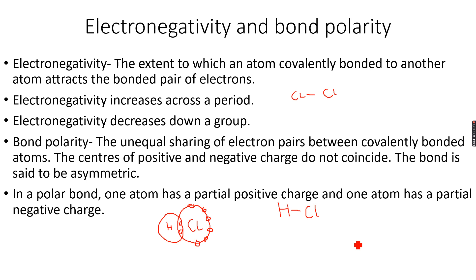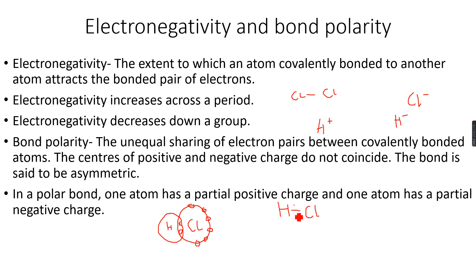Chlorine is much more electronegative than hydrogen. We know this because chlorine forms Cl⁻ ions much more readily than hydrogen forms H⁻ ions — hydrogen readily forms H⁺ ions instead. So chlorine is much more electronegative than hydrogen and will pull the bonded pair of electrons toward itself. We represent this by drawing an arrow toward the more electronegative atom.